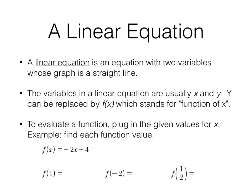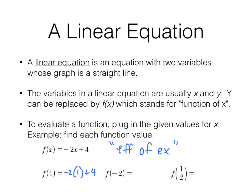A linear equation has two variables whose graph is a straight line. The variables are usually x and y. y can be replaced by f(x), which stands for 'function of x.' To evaluate a function, plug in the given values for x. For example, f(x) = -2x + 4. Finding f(1) means substituting 1 for x: -2 times 1 plus 4 equals 2, so f(1) = 2.